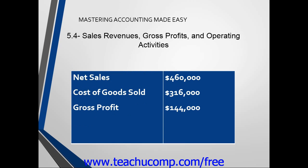Gross profit is the excess of net sales over the cost of goods sold. Companies will take the sales revenue and subtract cost of goods sold to determine the gross profit. In our example for this period, we have net sales of $460,000. After we subtract the cost of goods sold, or the cost of making the products, our gross profit is $144,000.